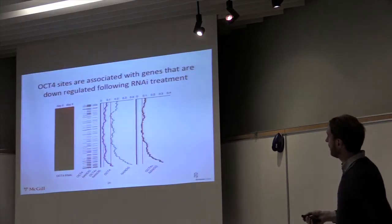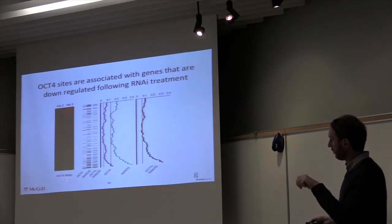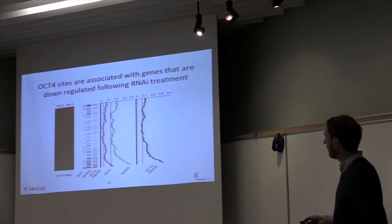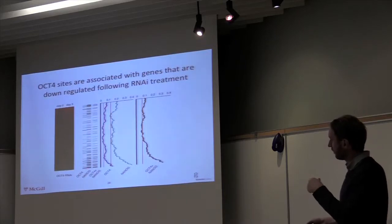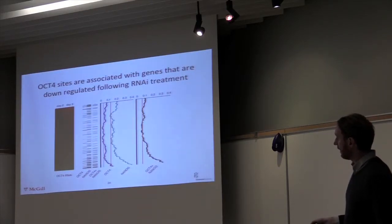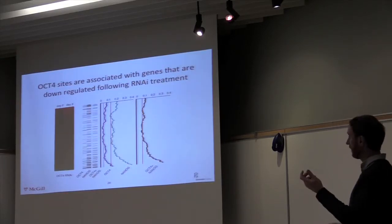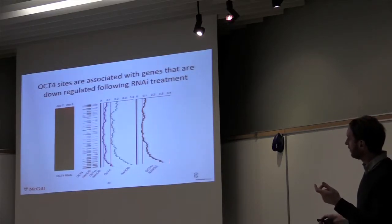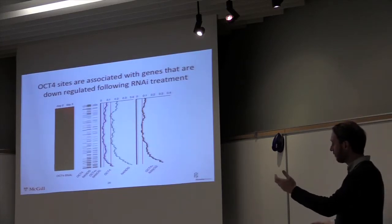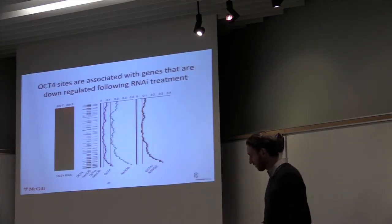In terms of more functional data, looking at the expression data — we knocked down Oct4, which is a key transcription factor in both human and mouse ES cells. If we knock down Oct4, some genes go up, some genes go down. The genes that go down were likely targets of Oct4 — they were upregulated when Oct4 was present. What we see is that around the downregulated genes following Oct4 knockdown, there is an enrichment of binding sites for Oct4 and Nanog, which is what we would expect. This is typically how we define target genes: they're differentially regulated if you remove the factor, and they have binding sites in their promoter suggesting these are active and functional sites.